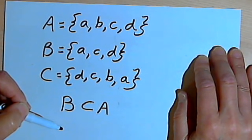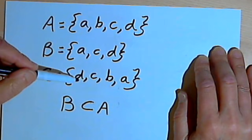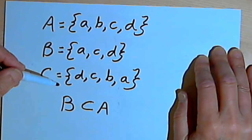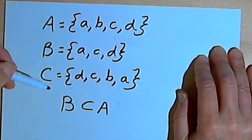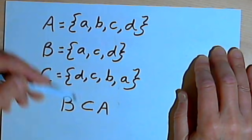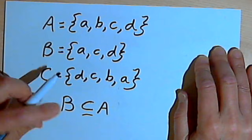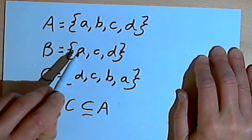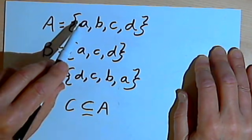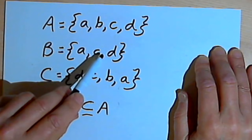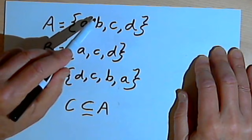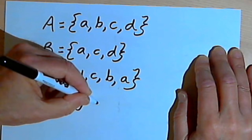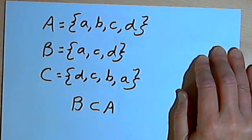So once again, the distinction is this: anytime all of the elements of one set are found in another set, we can say that first set is a subset of the other one. So set B is a subset of set A, and set C is a subset of set A. If a set is a subset but also has fewer elements than the superset, then we can say that it's a proper subset. Proper subsets have fewer elements than their superset.